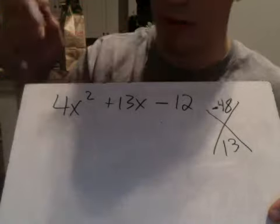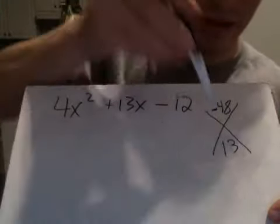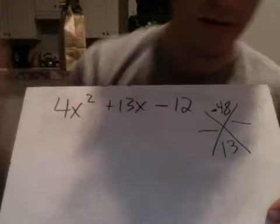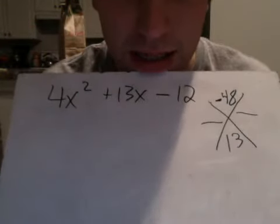I got that number up top here by multiplying the first number times the last number. So then, I'm trying to think of two numbers that multiply to 48 and add up to 13.